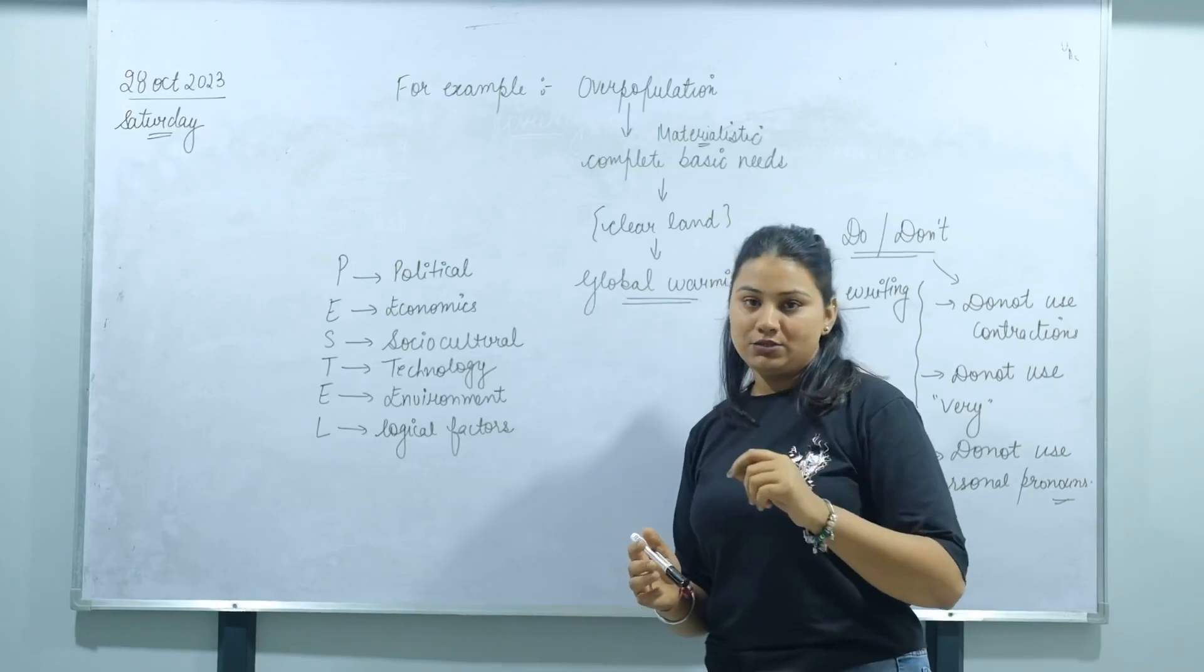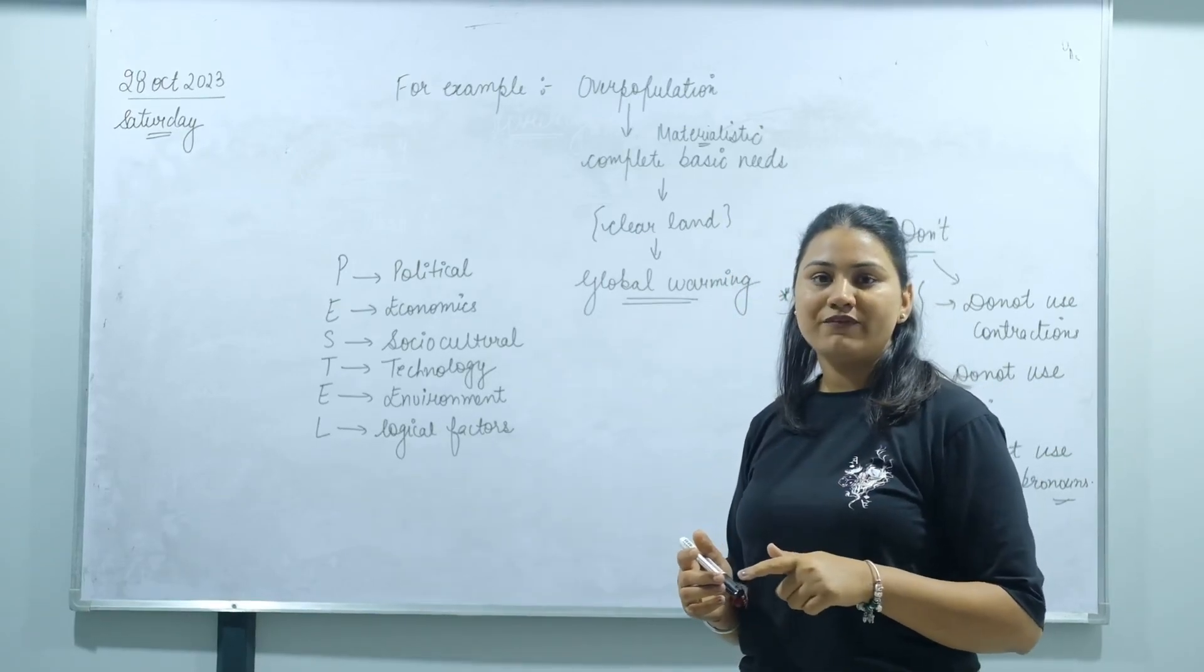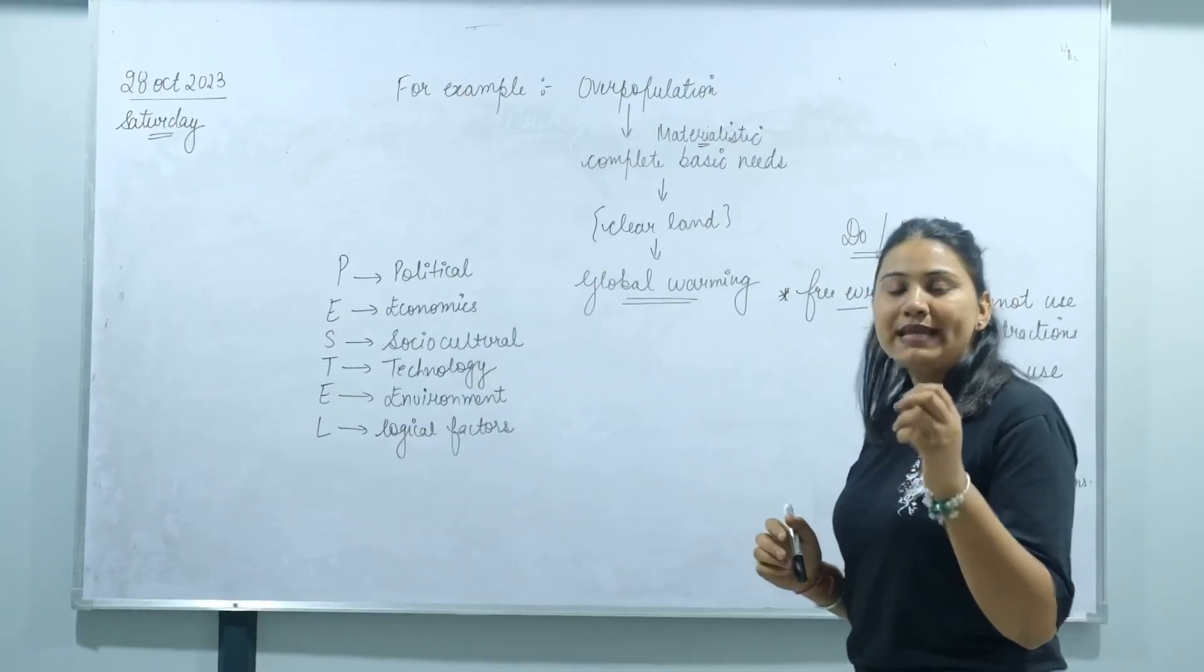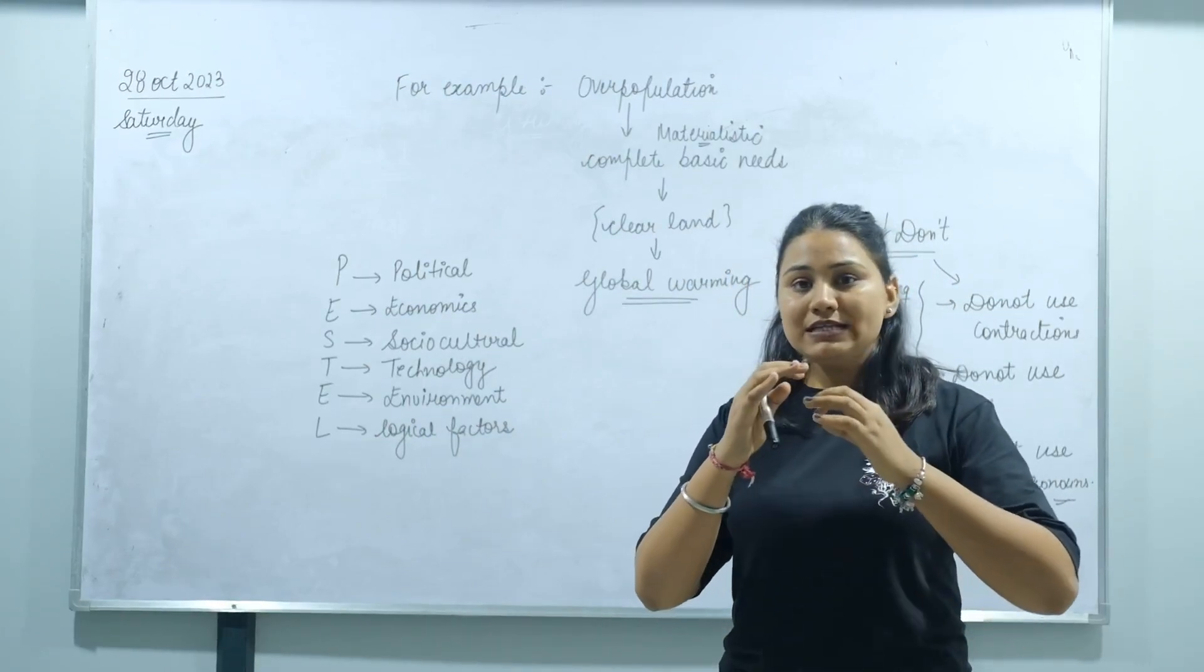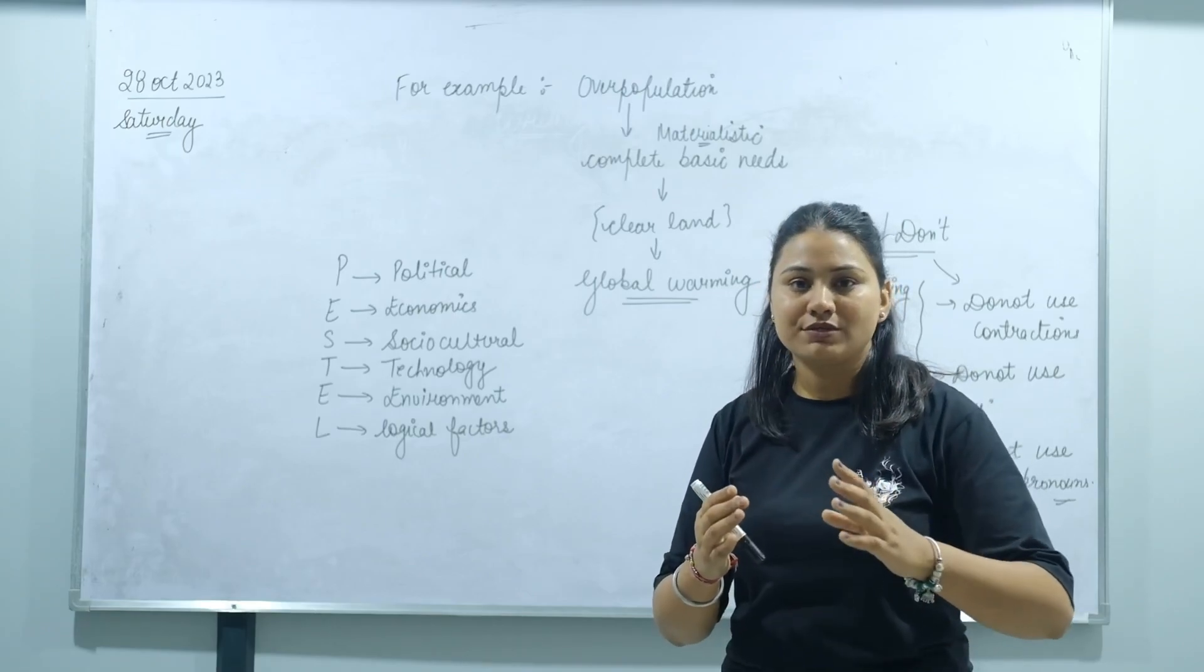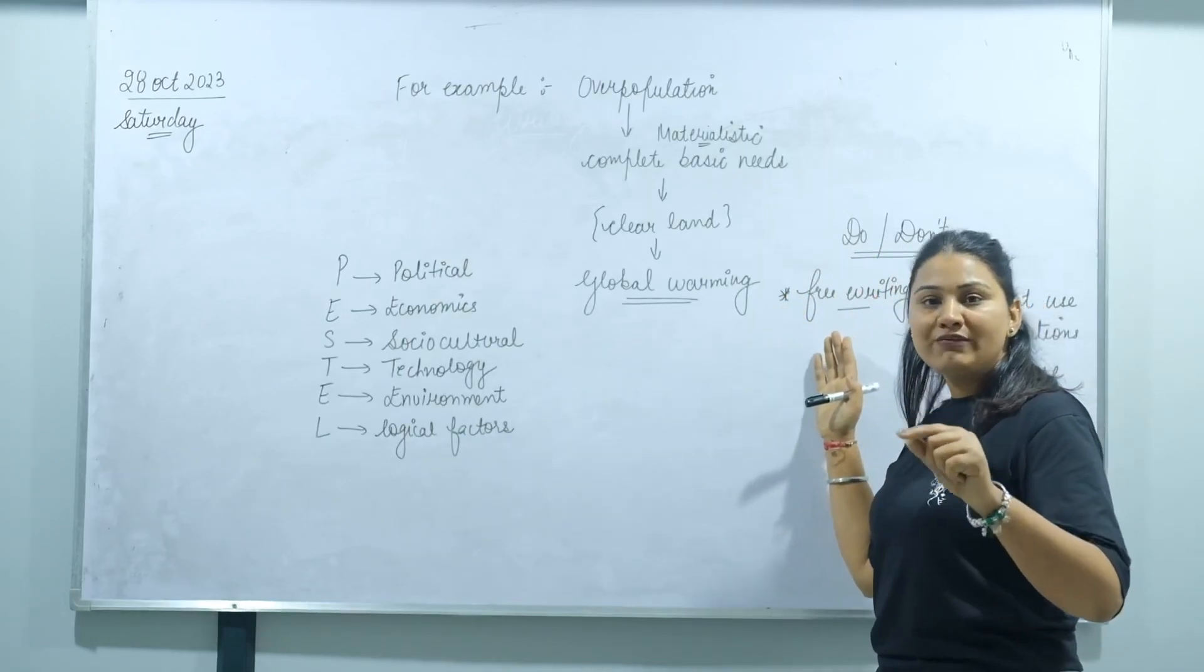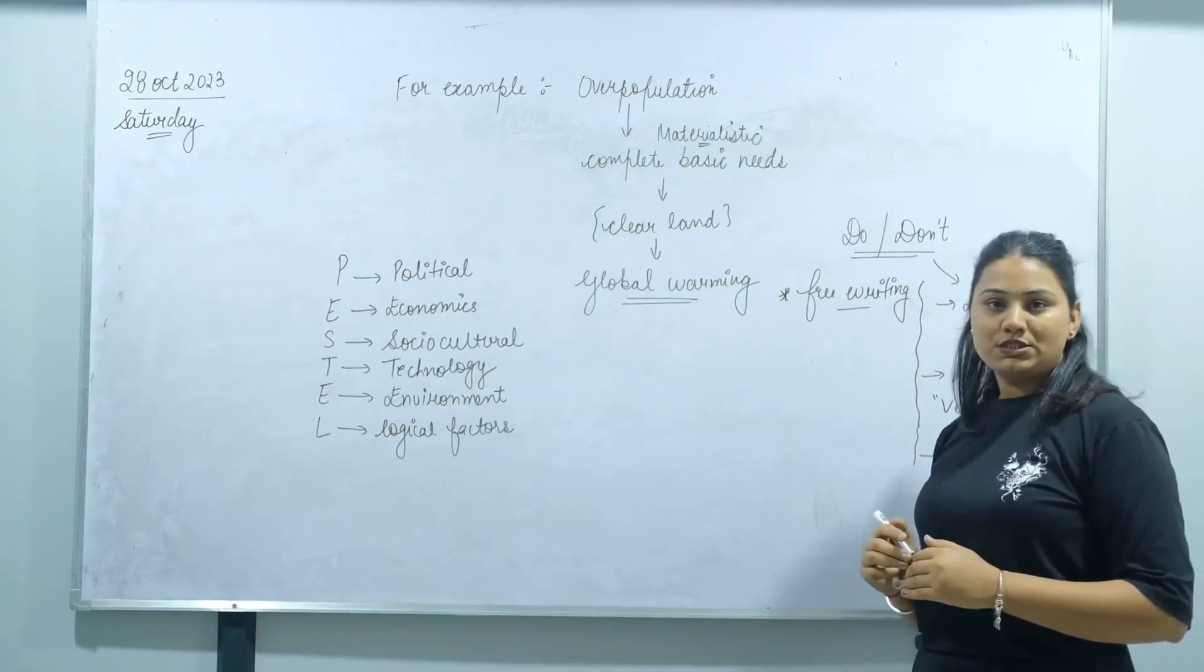The last topic is the do's and don'ts for academic writing task 2. First, the do's: to increase your band score, the best method is to do free writing. Even if you don't have any structure or connectors, you can use free writing and your band score will improve.